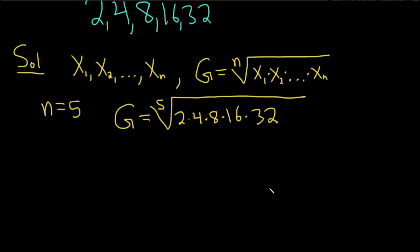And so if you work this out, put this in your calculator, you get 2 times 4 times 8 times 16 times 32, we get the 5th root of that, and we end up with 8. So this is equal to the number 8.